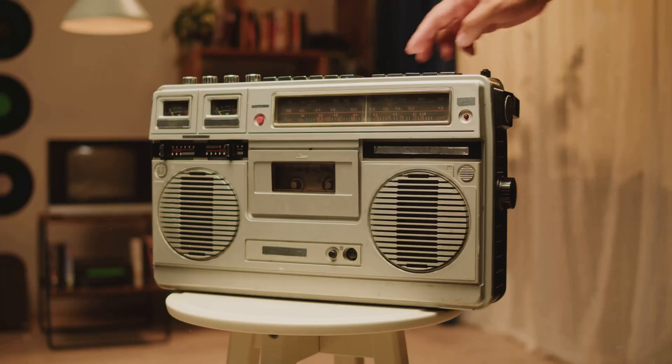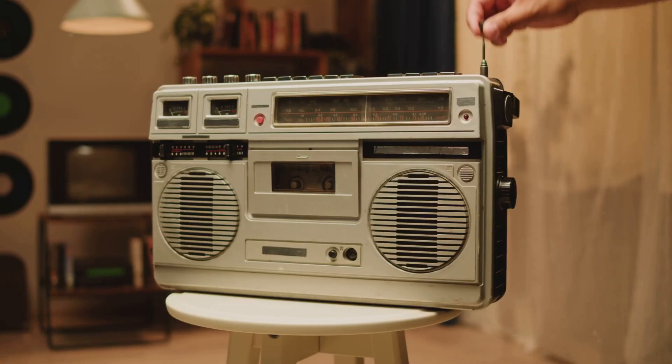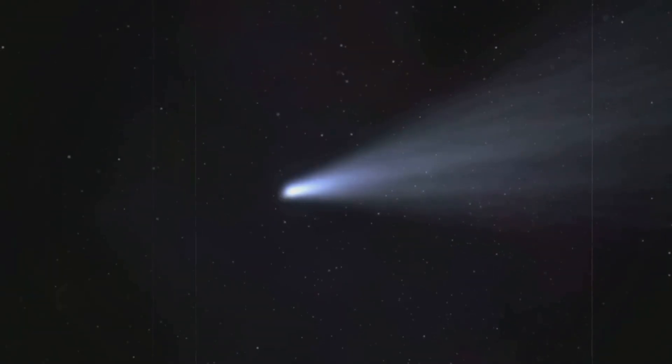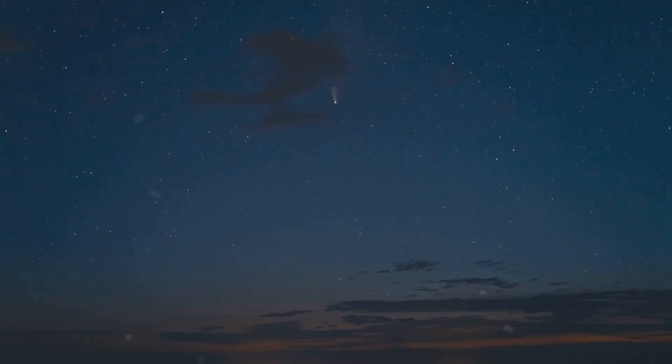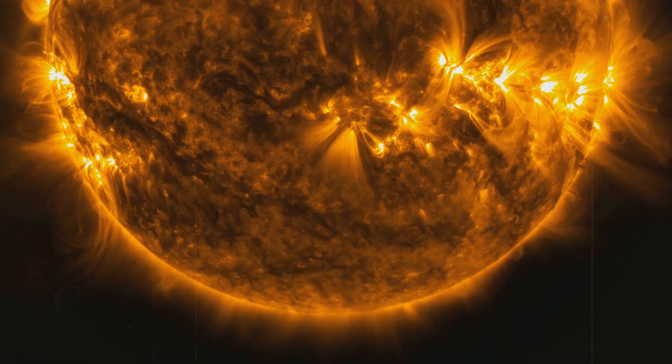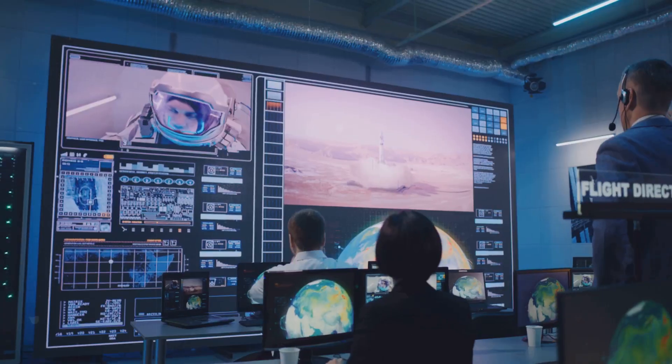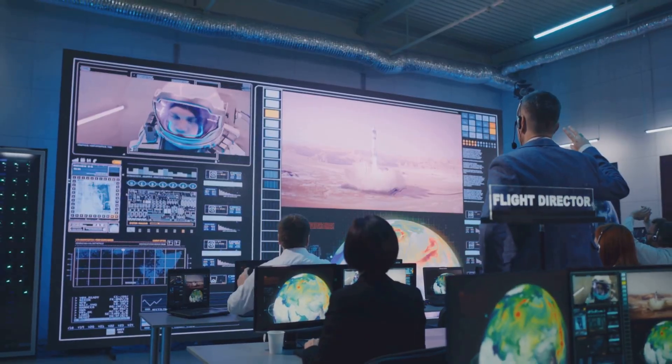In 2013, comet Ison swept perilously close to the Sun, only to disintegrate in the furnace of its perihelion. Hours later, a coronal mass ejection erupted, though debates continue over whether the two events were linked.